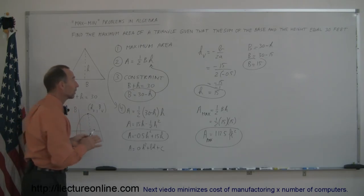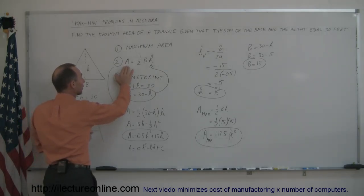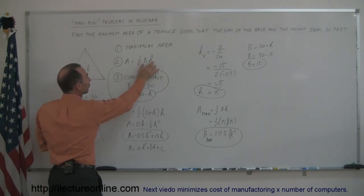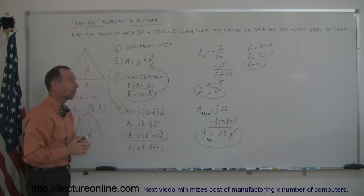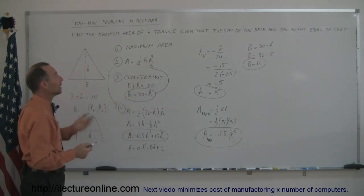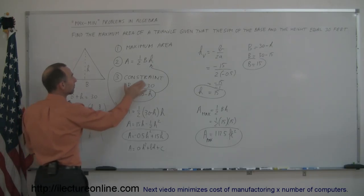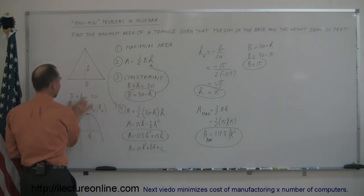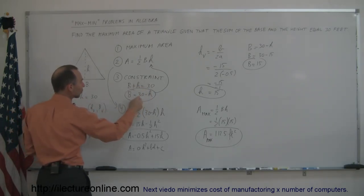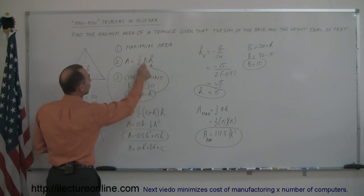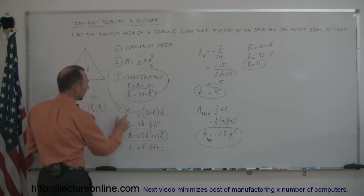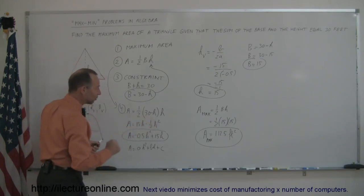You then go look for a constraint, because since the area is calculated in terms of two variables, and you can't figure it out when you have two variables, you need to eliminate one of the two variables, and you do that by finding the constraint. The constraint in this case is that the base plus the height must equal 30 feet. You solve that constraint for one of the two variables, I chose b, and plug that back in the original equation, so that when I do that I end up with an equation that's only in terms of h, one variable.